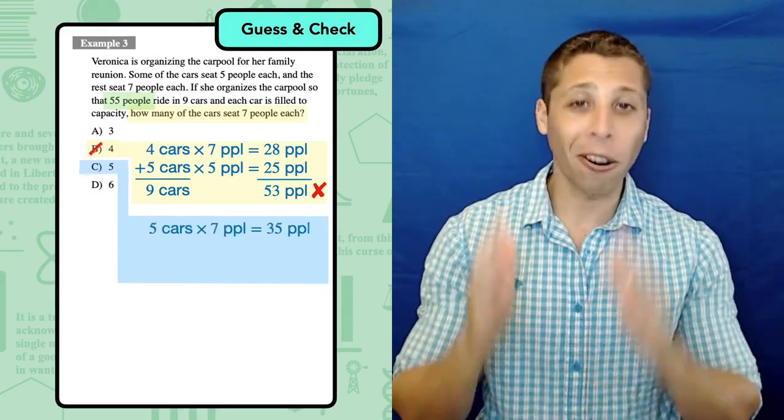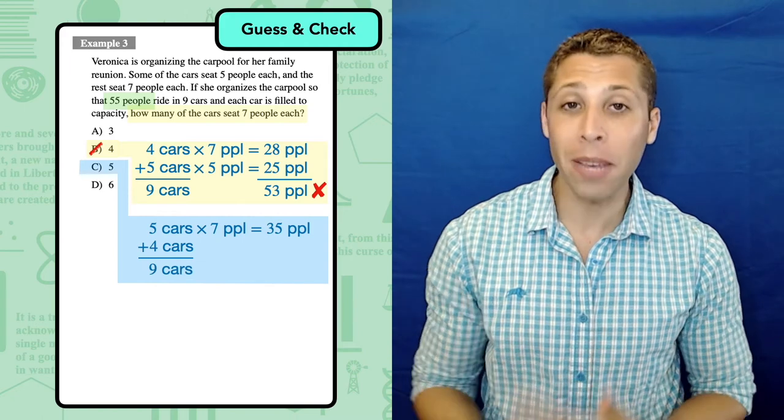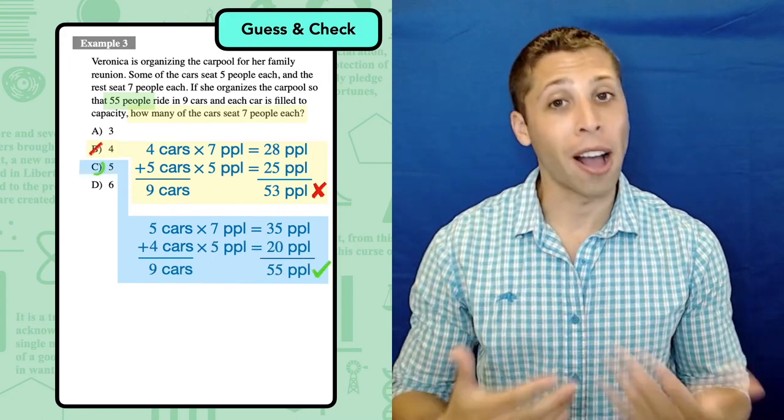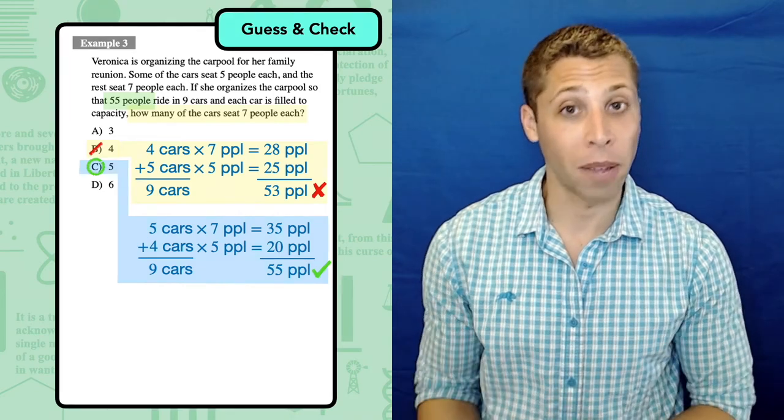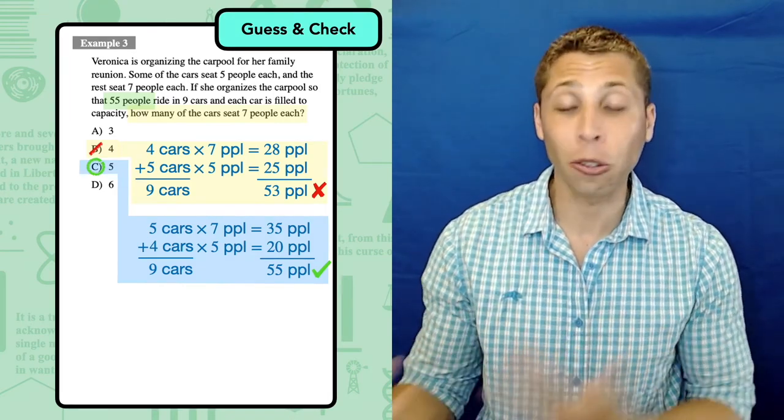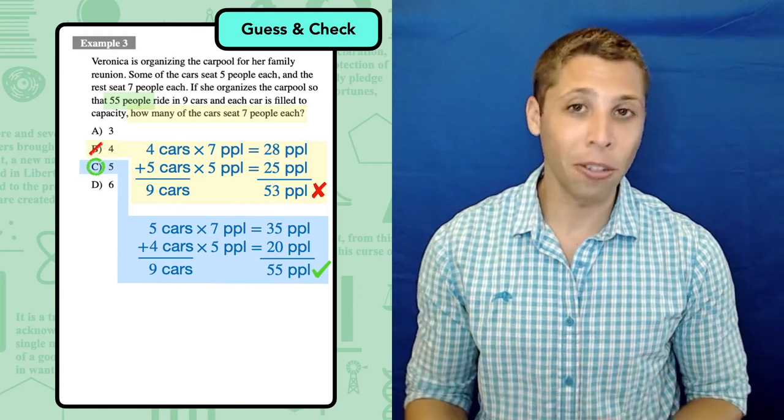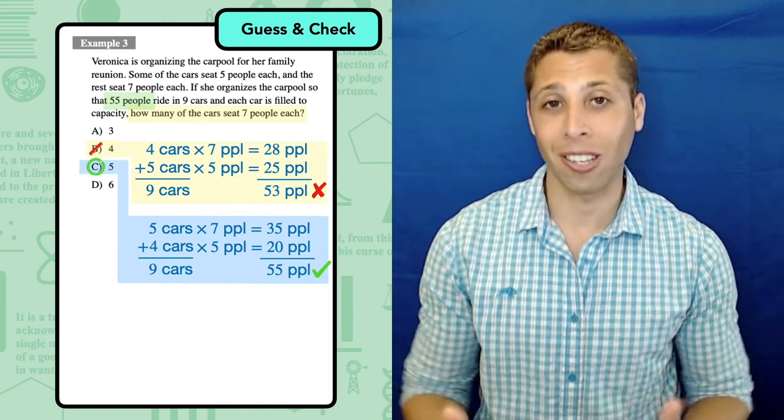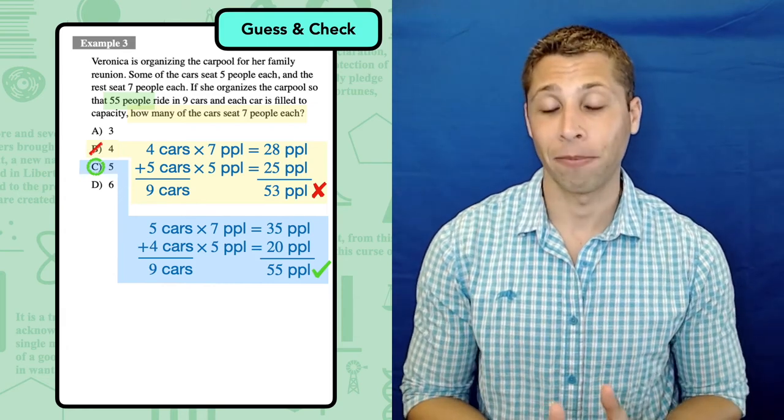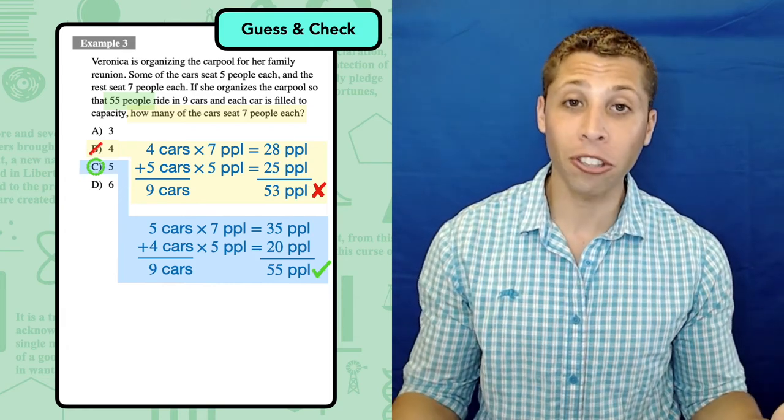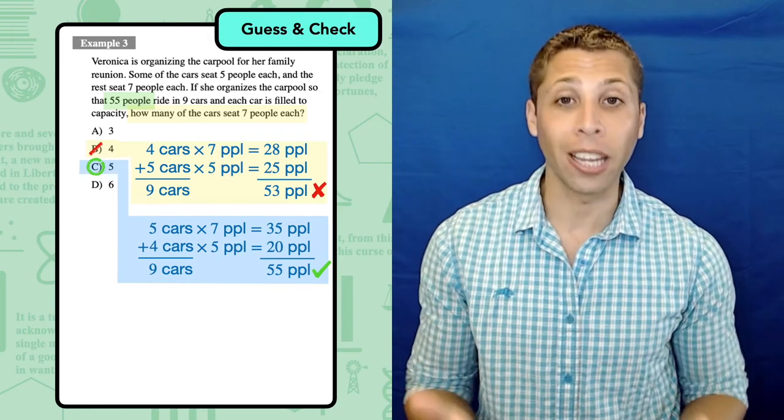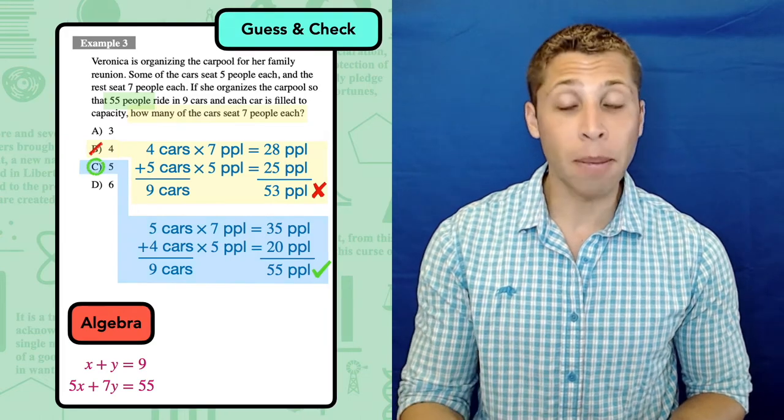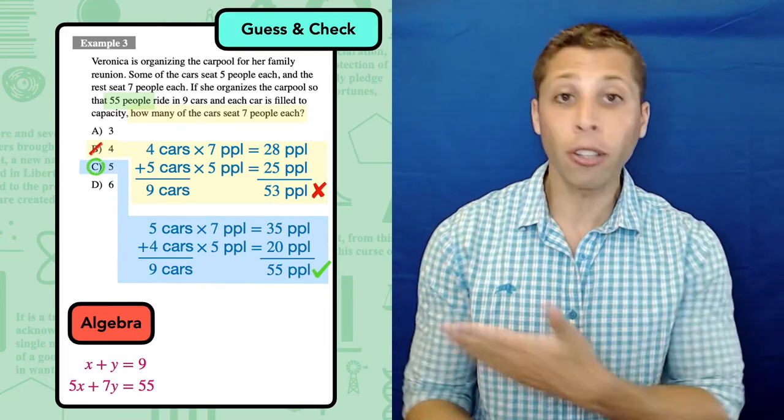We should try choice C because we want more cars that seat seven people so that we have more people overall at the end. Again, notice that our steps are exactly the same as what we did before for choice B. We multiply five times seven to get 35. We subtract five from nine to get four cars remaining, which we then multiply by five to get another 20 people. And since 35 plus 20 is 55, we know that choice C is correct. We can be confident in this answer. Could we have solved this with traditional algebra? Again, absolutely. We would need to generate a system of equations, and many of you may have been able to do that very easily. It would look like this.